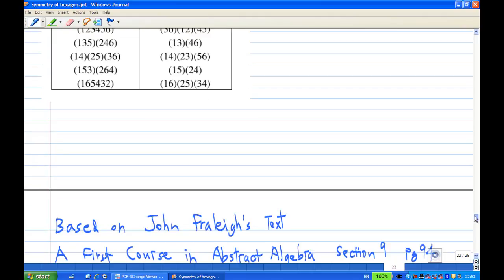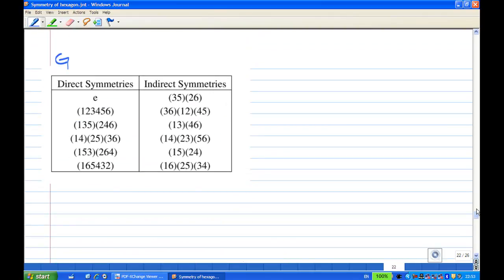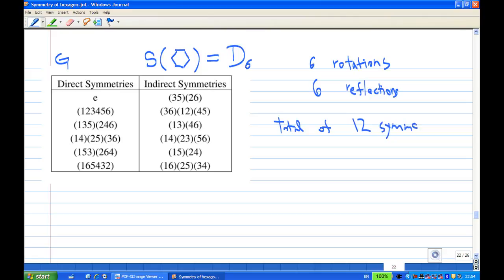From the earlier part, we already found out the symmetry of the regular hexagon. The symmetry group of the regular hexagon, we can write as S, or another short form, we call it D6, dihedral group of order 6. There are 6 rotations, we call them direct symmetry, and 6 reflections, we call them indirect symmetry. All together, total of 12 symmetries for the regular hexagon. Therefore, the size of the symmetry group of the regular hexagon is 12.